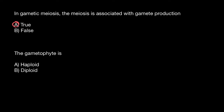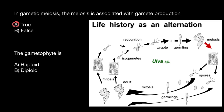And the second question — we have to choose one of these answers. Take a look at this picture: life history as an alternation of generations, or what we also call sporic meiosis. Here we have a diploid organism which, through meiosis, produces spores.